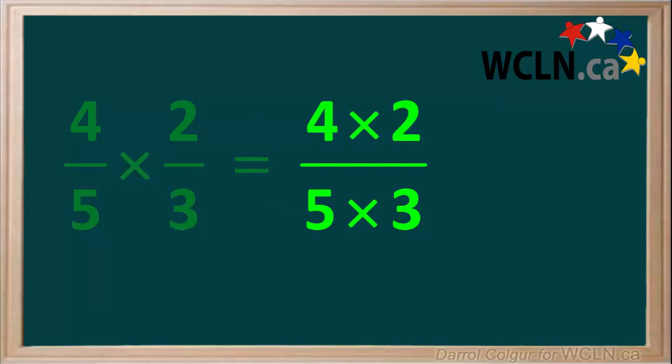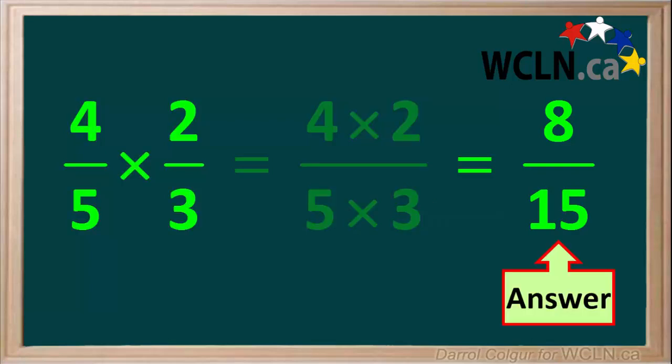Now we are left with the fraction 4 times 2 over 5 times 3. We make this equal to a new fraction and multiply the numbers. 4 times 2 equals 8, and 5 times 3 equals 15. So the final answer to the question is the fraction 8 over 15, or 8 fifteenths. There is no number other than 1 that will divide into both 8 and 15, so this answer is in its lowest terms. Also, it's a proper fraction, so it doesn't need to be converted to a mixed number.